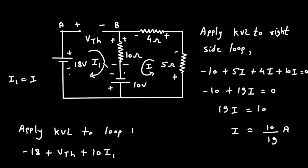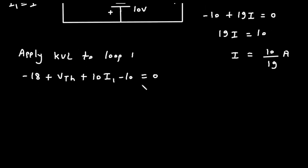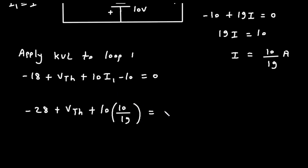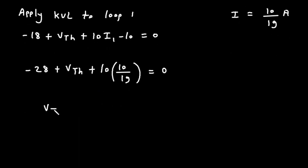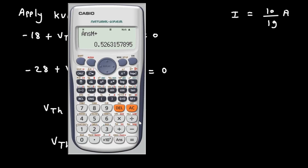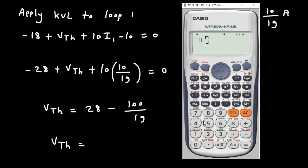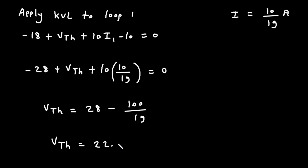Continuing the KVL equation for loop 1: minus 18 plus VTH plus 10 × I1 minus 10 equals 0. Simplifying: minus 28 plus VTH plus 10 × (10/19) equals 0. Therefore VTH = 28 minus 100/19 = 22.73 Volt.